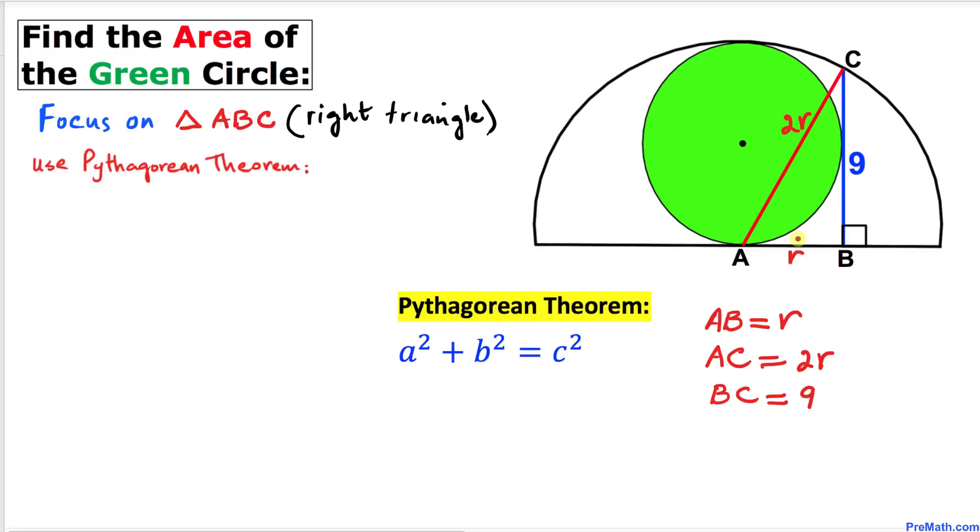Let me call side AB lowercase a, this vertical side BC I'm going to call side b, and the longest leg AC I'm going to call side c.